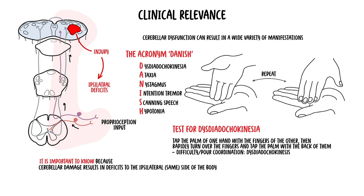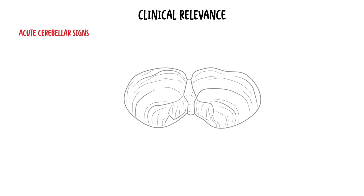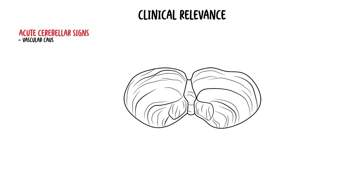Whereas if you injure your cerebral cortex, it typically causes contralateral deficits — the opposite side. Acute onset of cerebellar manifestations is considered an emergency, as it can be due to vascular causes such as a stroke or hemorrhage, or cerebral edema.